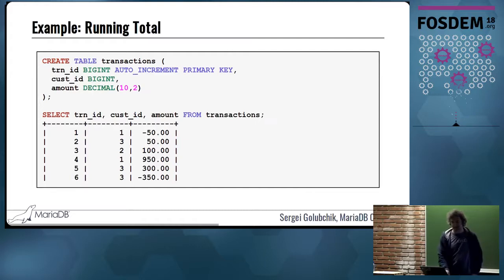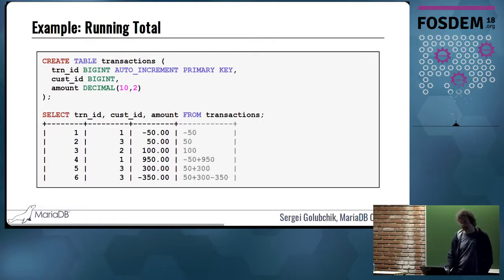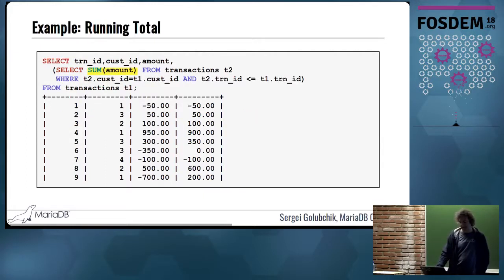Every transaction has a transaction ID, a customer ID, and an amount of monetary units, which I'll call coins here. This table transactions stores what users did what transactions. In the first transaction, the first user took 50 coins out of his account, then the third user put 50 coins into his account, and so on. Say we want to know the balance on each account after every operation. After the first user took 50 coins, the balance is minus 50. For the second it's plus 50. Then the first user put 950 on his account, and the balance will be 900, and so on. So how can we do this in SQL?